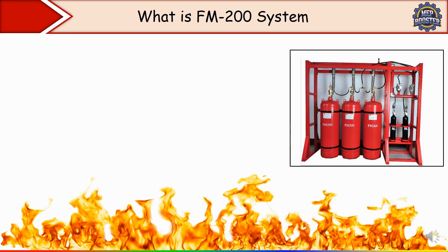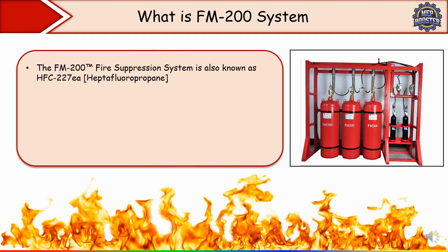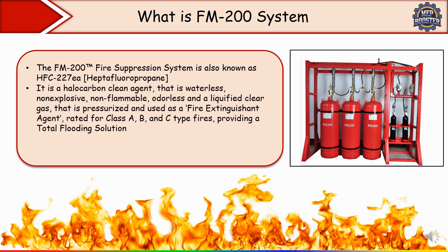First, we'll see what is the FM-200 fire suppression system. FM-200 is a type of clean agent fire suppression system that uses HFC-227EA — heptafluoropropane — as its extinguishing agent. It is a halocarbon clean agent that is waterless, non-explosive, non-flammable, odorless, and a liquefied clear gas that is pressurized and used as a fire extinguishing agent rated for Class A, B, and C type fires, providing a total flooding solution.